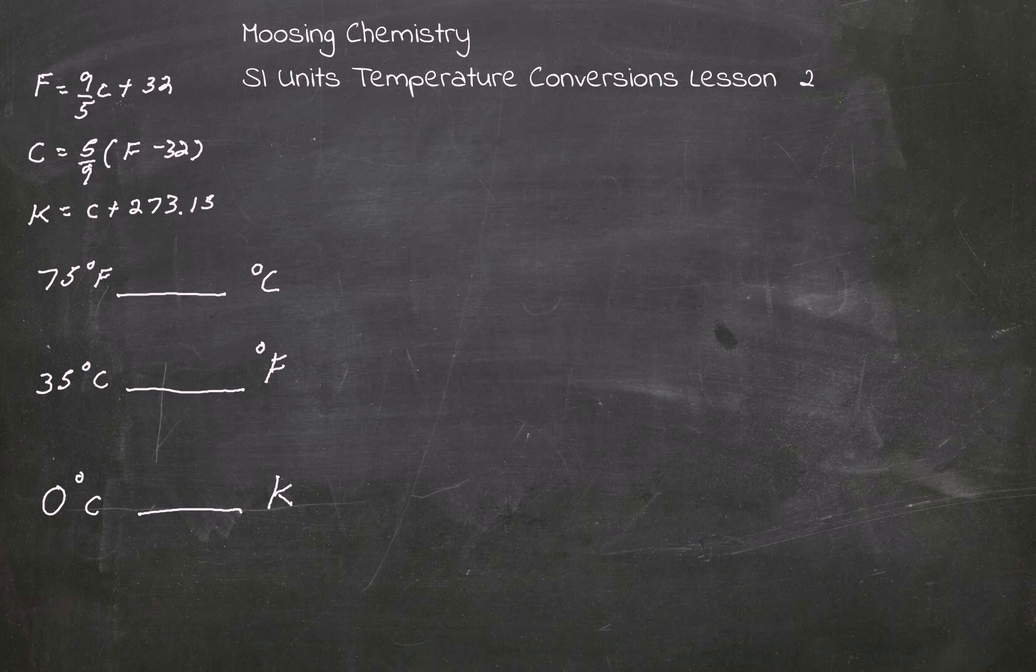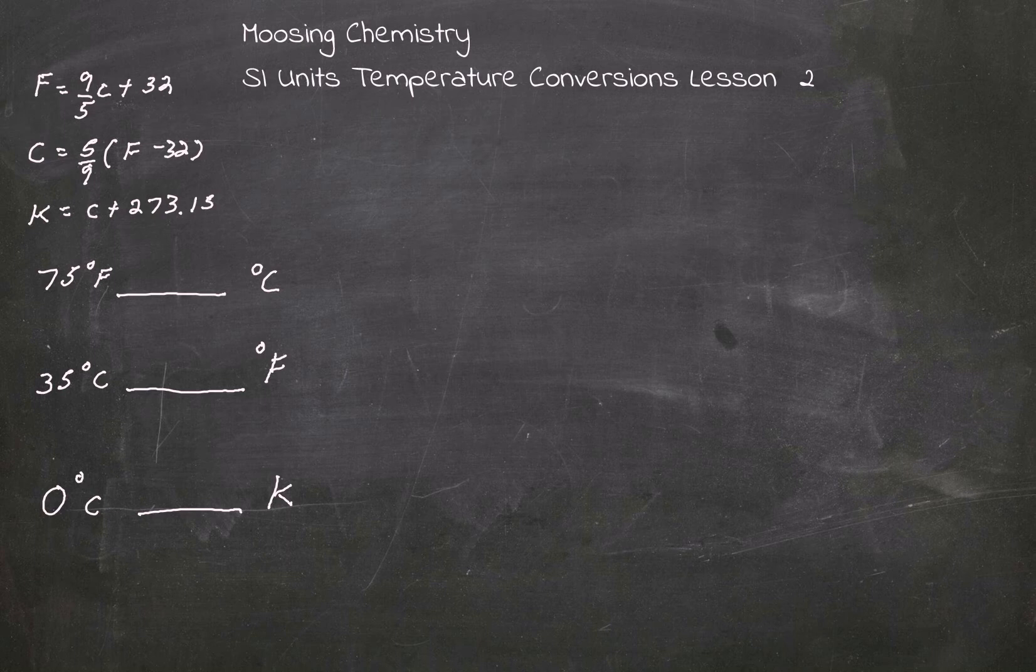Hi, welcome back to Mousin Chemistry. We're going to talk about SI units today. Let's look at three problems. We're going to take 75 degrees Fahrenheit and convert it to Celsius first.